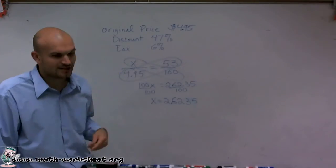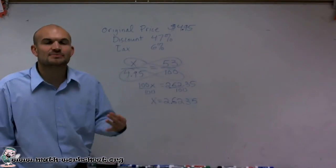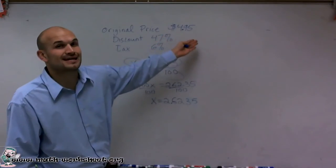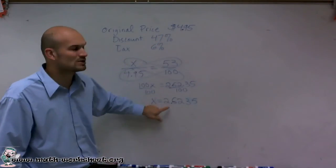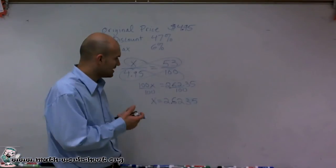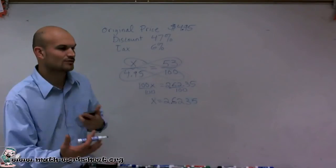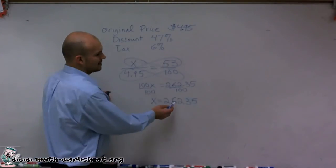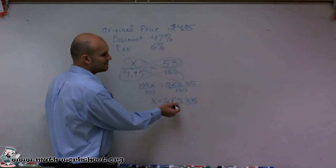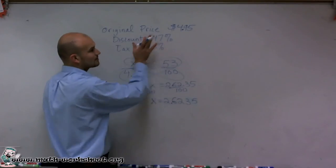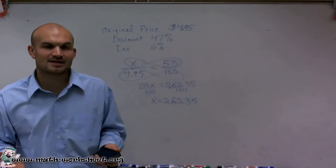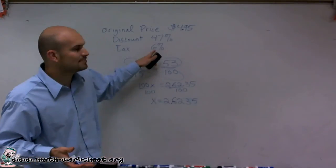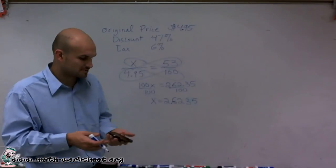Now the next thing is we need to calculate the tax. The tax is going to be on how much you're purchasing the game for. You're not purchasing the game for $4.95, you're purchasing the game for its discounted amount. So what we're going to look at is, what I'm trying to do is multiply this by 6% to see what is the value of the tax on this amount.